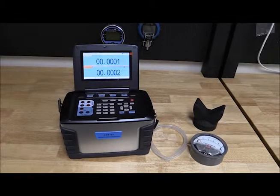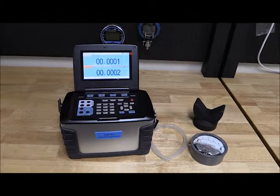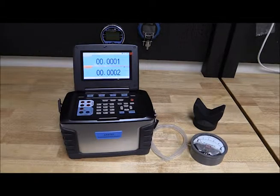For this example, we use an Additel 761 LLP Automated Pressure Calibrator as our pressure source and reference. We will be calibrating a magnehelic differential gauge that is 0-10 inches of water.